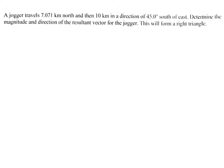Hey guys, so for this vector problem we've got a jogger heading 7.071 kilometers north, so that's going to be straight up. Then he had 10 kilometers in the direction of 45 degrees south of east, so east would be going directly to the right.